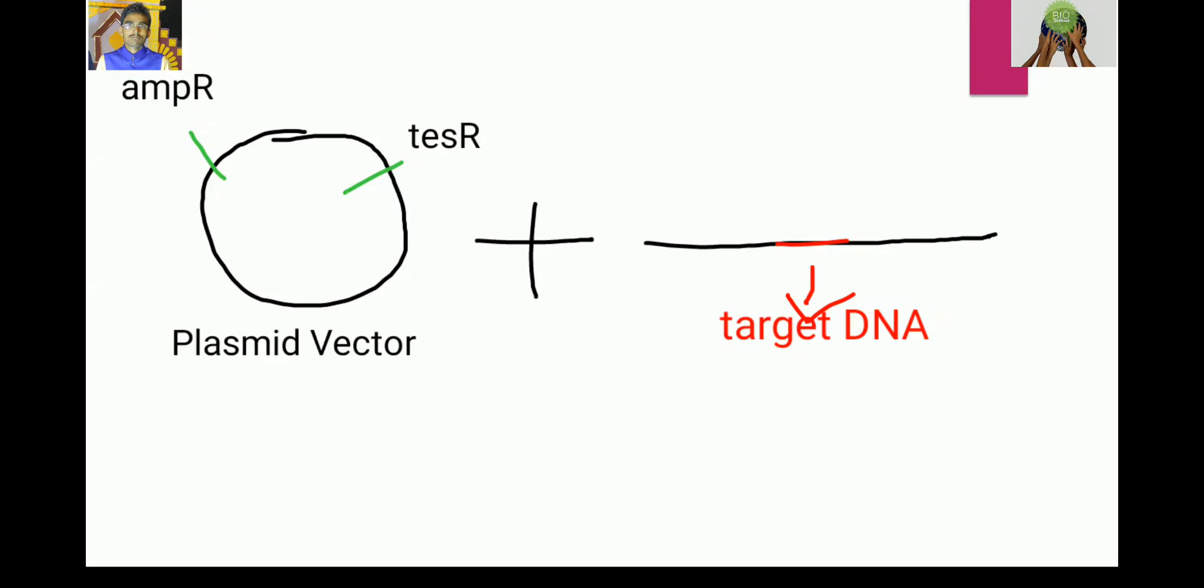In the figure you can see the circular plasmid vector and the linear DNA. It may be circular but I just denote it linear. The red color fragment is our target DNA. In plasmid vector, two selectable markers present: ampicillin resistance gene and tetracycline resistance gene.